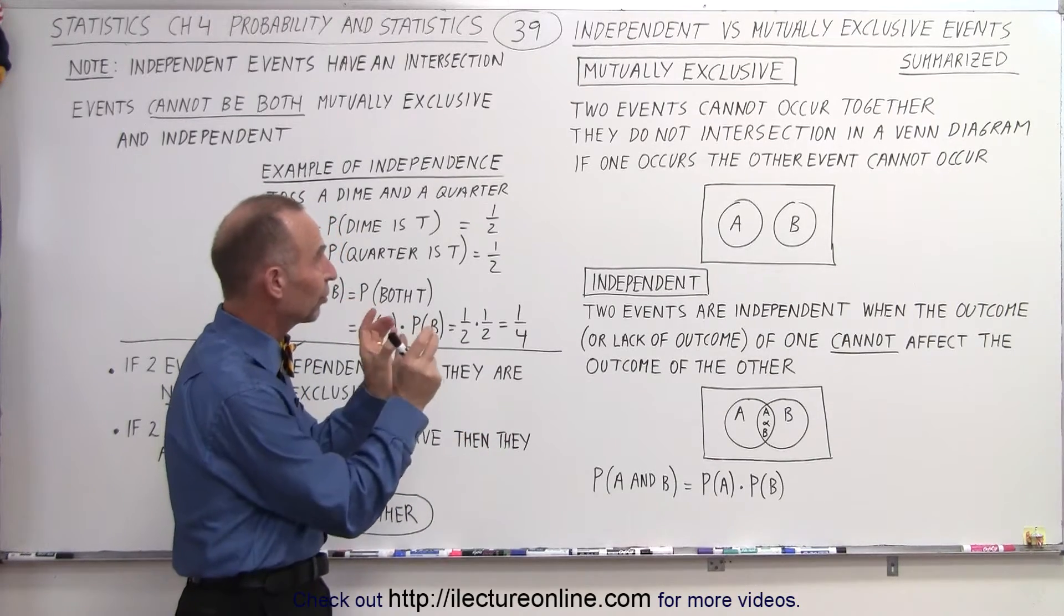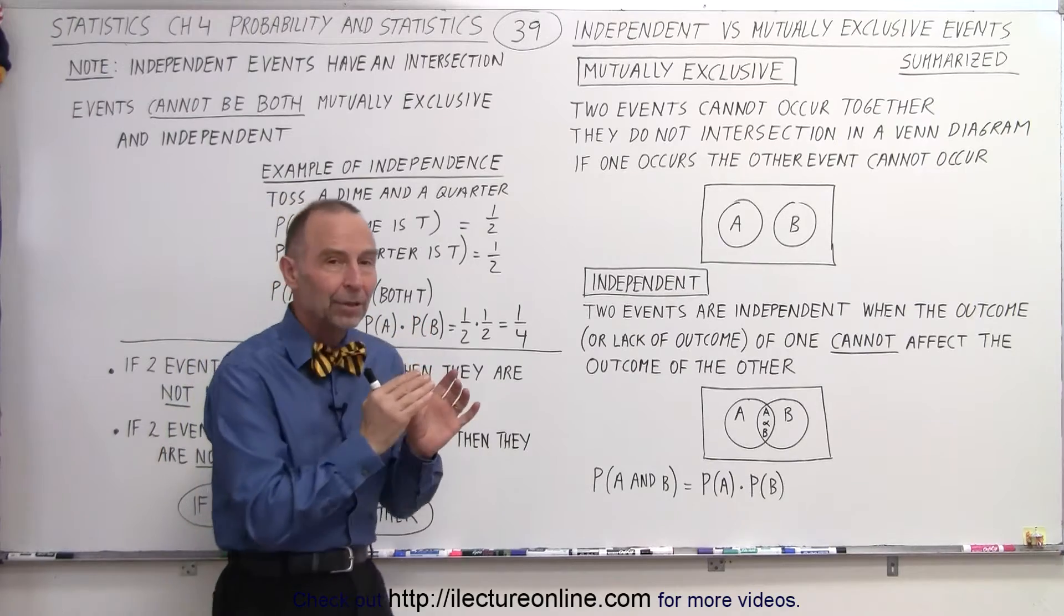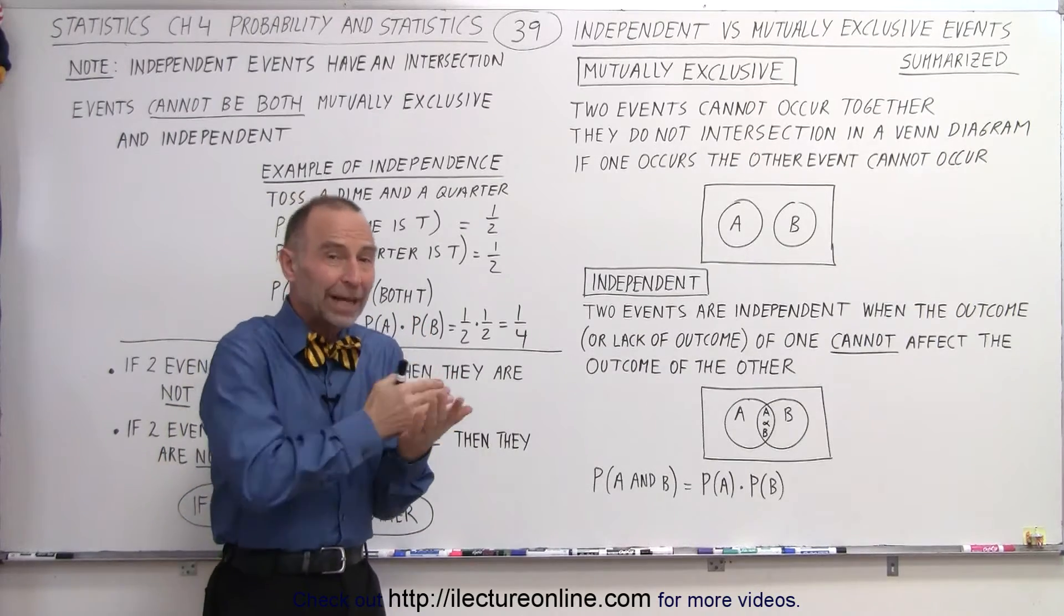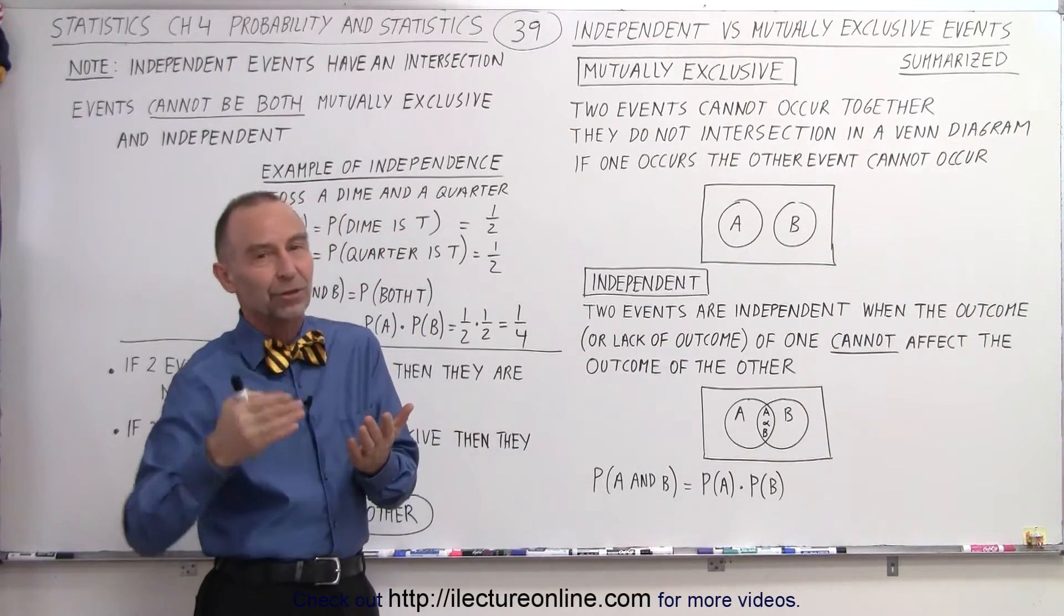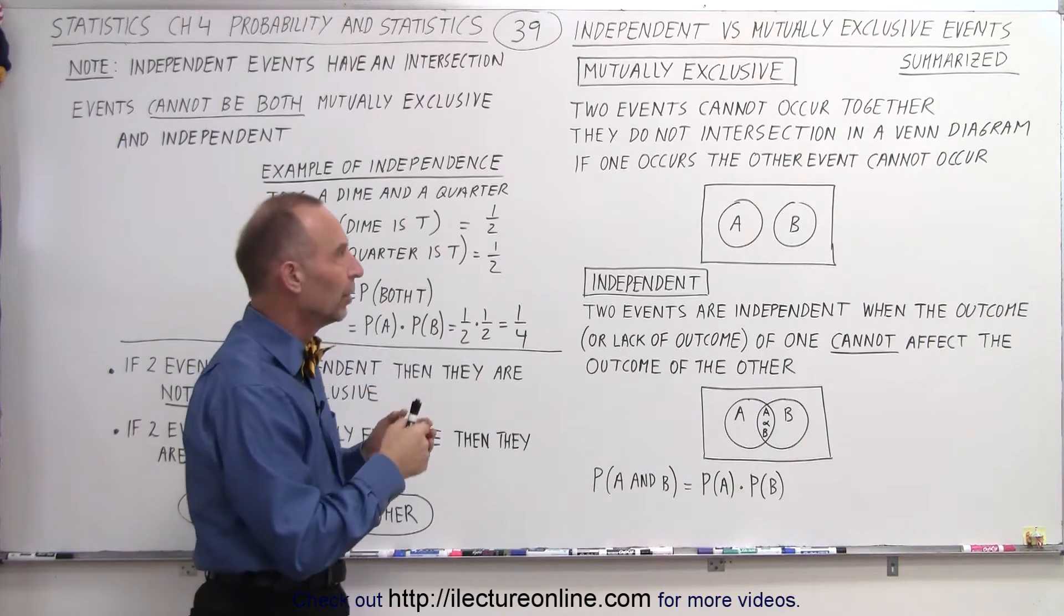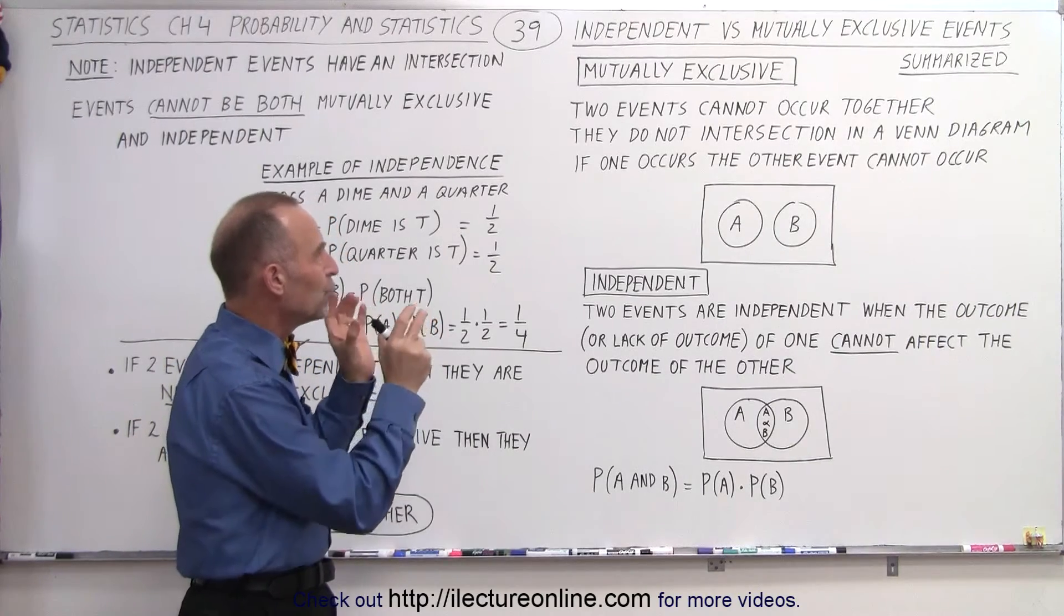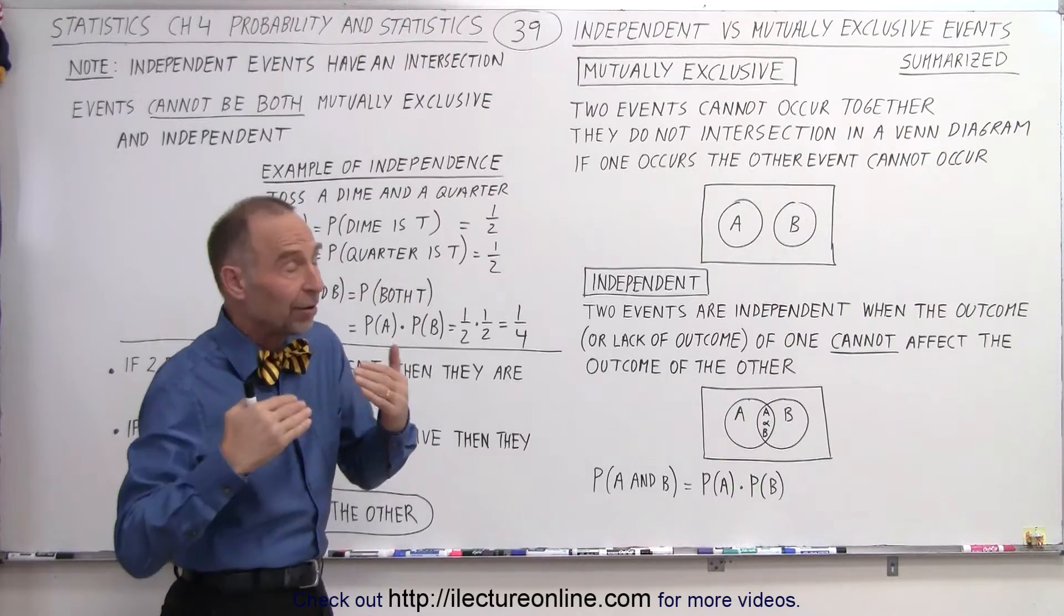When two events are mutually exclusive, they cannot happen together. In other words, if one happens, you cannot have the other, and if the other happens, you cannot have the one. So that's what we mean by mutually exclusive. If we draw a Venn diagram,